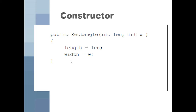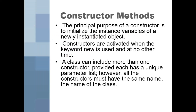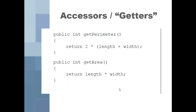A constructor is basically how you build the class to make an object from it — what do you need to build it with? The principal purpose of a constructor is to initialize instance variables of a newly instantiated object. Constructors are activated when the keyword 'new' is used. A class can provide more than one constructor, each with a unique parameter list, but all constructors must have the same name as the class.